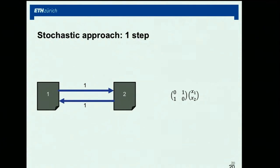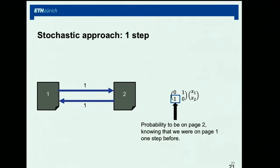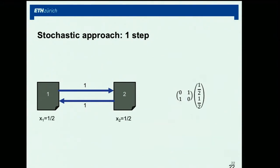For this graph, the matrix is [0,1; 1,0]. This kind of matrix is called a stochastic matrix — the probabilities of landing on a certain page knowing where you were one step before. It's a stochastic matrix because the probabilities sum to one on the columns, but not on the rows.